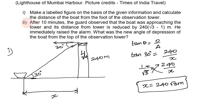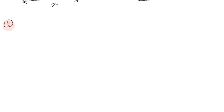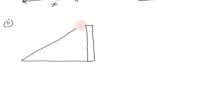For the second question: after 10 minutes, the guard observed that the boat was approaching the tower and its distance from the tower was reduced by 240(√3 − 1) meters. He immediately raised the alarm. What was the new angle of depression of the boat from the top of the observation tower?